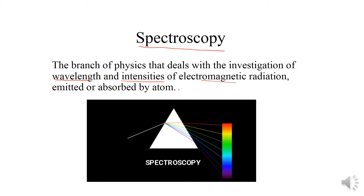अगर हम इन चीज़ों को discuss करेंगे तो उस branch को हम spectroscopy का नाम देते हैं। जैसा कि आप diagram में देख सकते हैं, whatever light coming to the prism — वो prism according to wavelength उस light को अलग-अलग patterns या directions के अंदर move करेगा, जिससे हमें output पर एक color pattern या band मिल जाएगा। Practically spectroscopy काफ़ी important है forensics में और real life में भी — इसकी मदद से बिना किसी element को chemical procedure से गुज़ारे हम उसको heat up करेंगे और जो रोशनी absorb या emit करेगा उससे उस element को recognize कर सकते हैं।